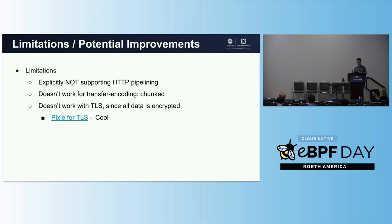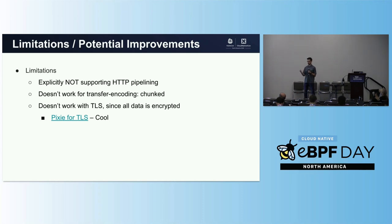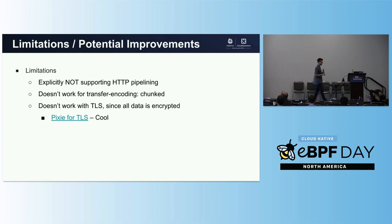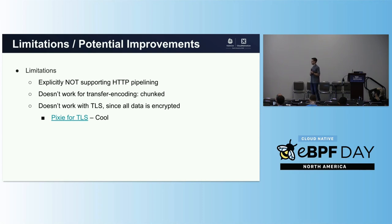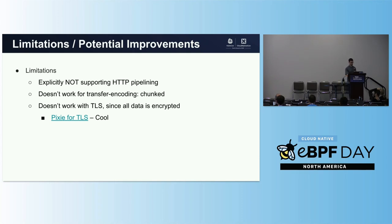There are some limitations to this approach. It doesn't currently support HTTP pipelining — it uses the assumption of one response per request. It doesn't support transfer-encoding chunked, and it doesn't work with TLS since the data is all encrypted. Pixie has a really cool mechanism using uprobes and hooking in there to support encrypted data — the previous talk was discussing that — and Pixie is doing some really cool work there.